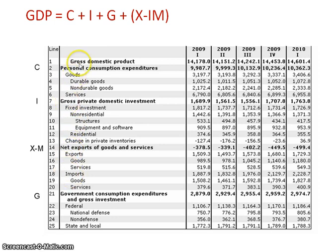When we're talking about consumption, we're talking about durable and non-durable goods. Durable goods are goods that last for at least three years, and then also services.